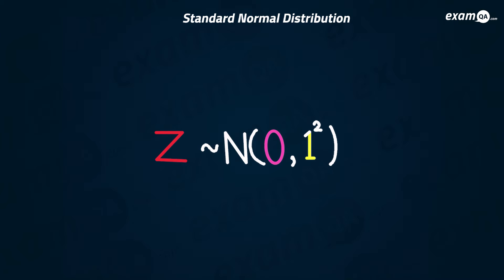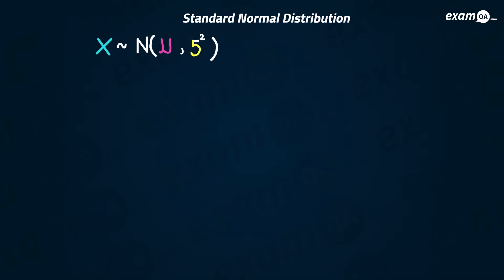Let's see where we might use the standard normal distribution. Here we've got a normal distribution where x is distributed normally with mean mu and variance 5 squared, and we need to work out the mean as it's not given to us. To do this, we need an extra piece of information. We're given that the probability of x less than 30 is 0.91924, and this is going to allow us to work out what mu is.